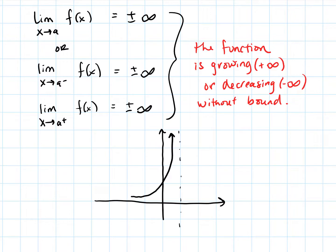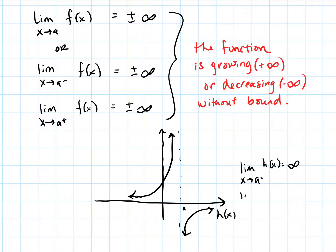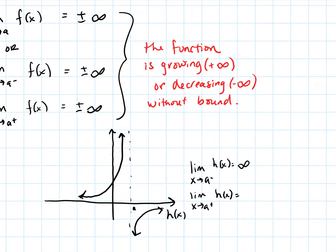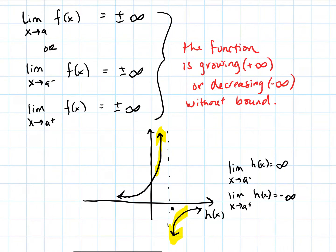Here is a function — let's call this value a, and let's call the function h of x. We would say that the limit as x approaches a from the left of h of x is positive infinity, and the limit as x approaches a from the right of h of x is negative infinity, because it grows without bound from the left of a and decreases without bound from the right side.